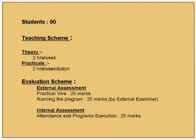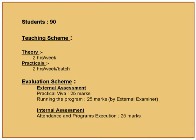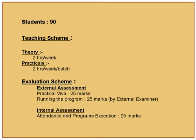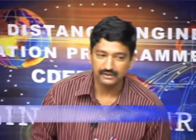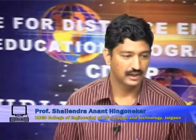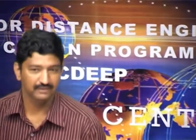Evaluation is done on the basis of an external examiner appointed by the university. He conducts a VIVA of 25 marks, and students have to write a program based on the syllabus. If the program runs successfully, he will award marks out of 25. The total 50 marks are in the hands of the external examiner, and the remaining 25 marks are in the hands of the internal examiner. Generally every week they have to perform the program being taught in class, and if the score is good, the internal examiner awards good marks.